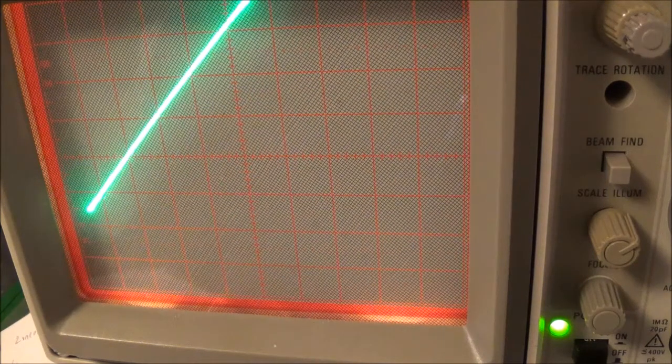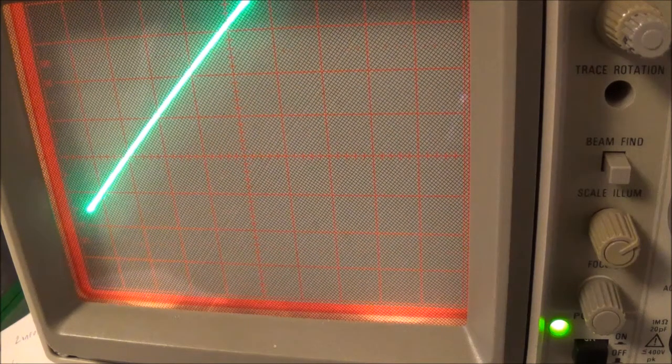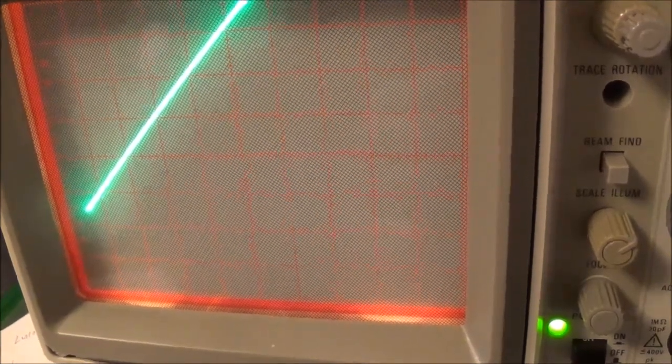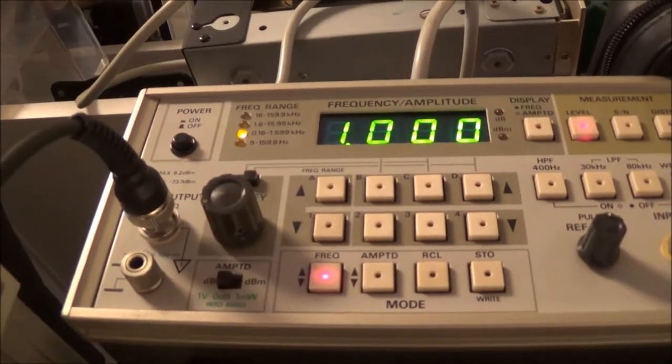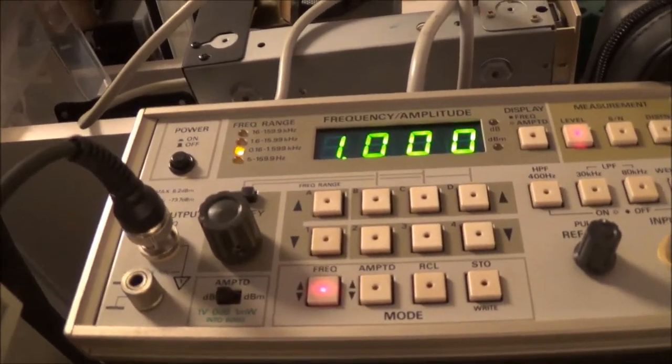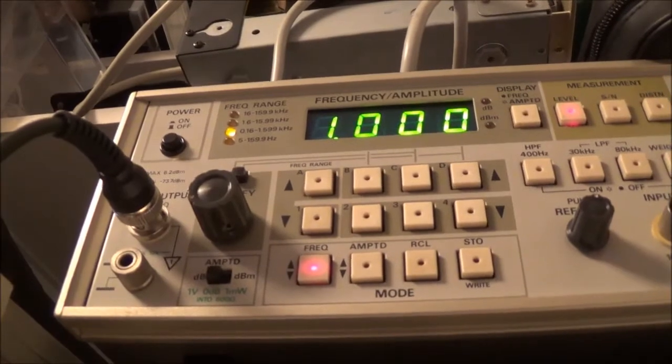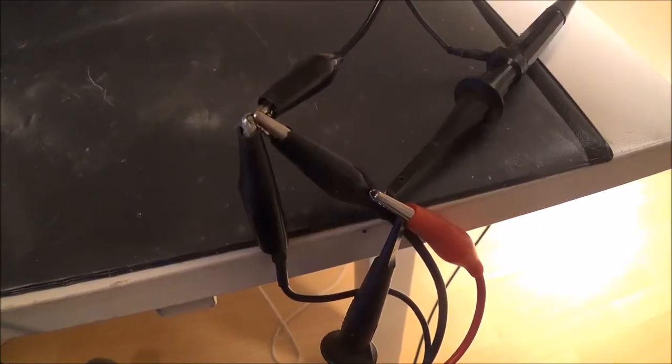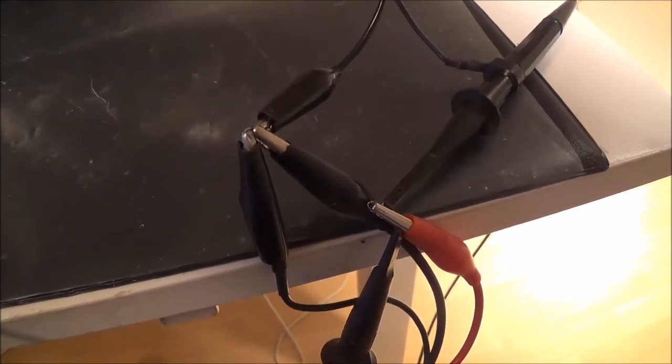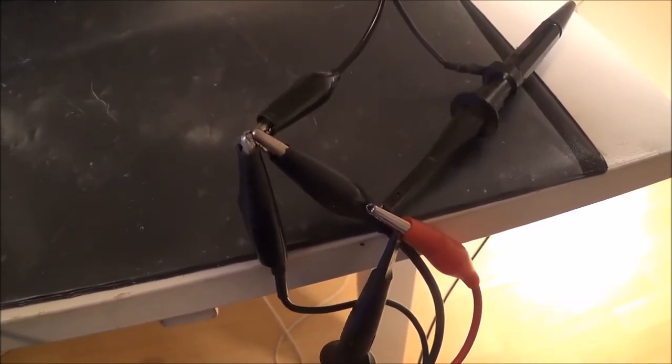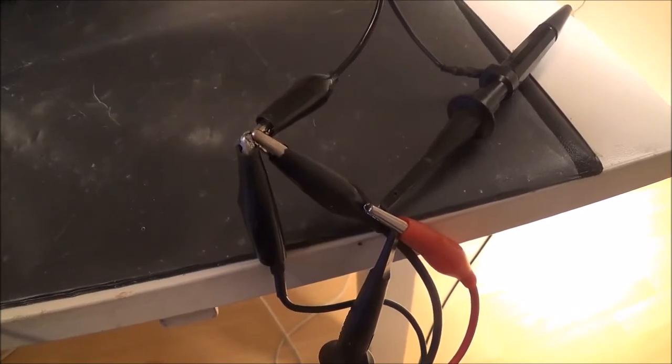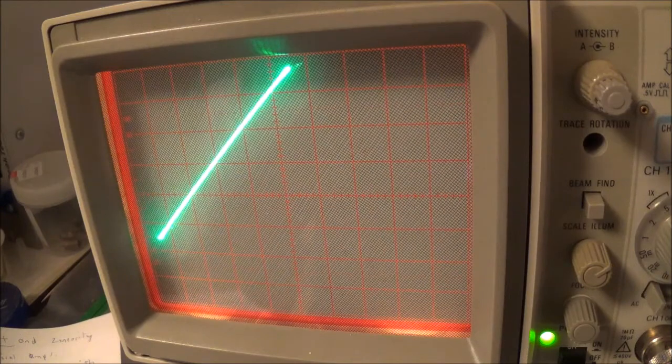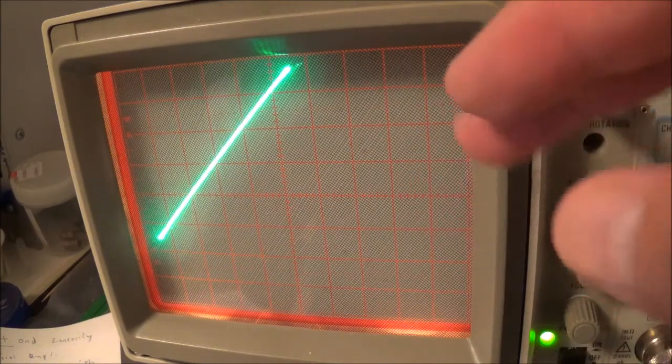Here you can see my signal generator. Here's the output there, there's a cable going to the probes, and that is just a normal standard 1000 Hertz sine wave. I connect the hot lead of the signal generator to both the horizontal and vertical input of the scope. Of course that's why the two probes are there.